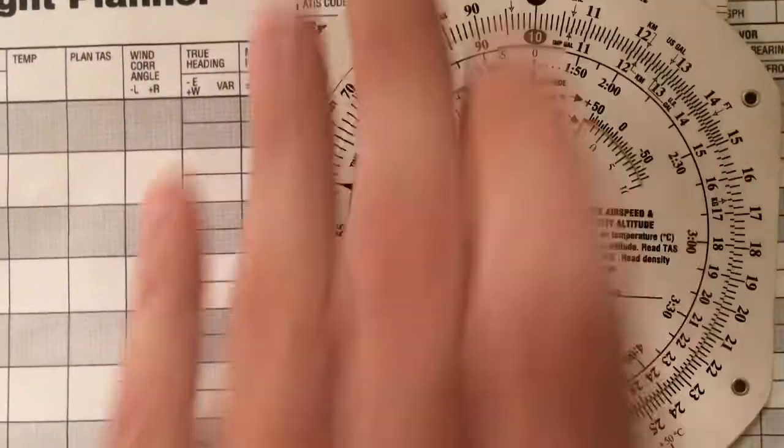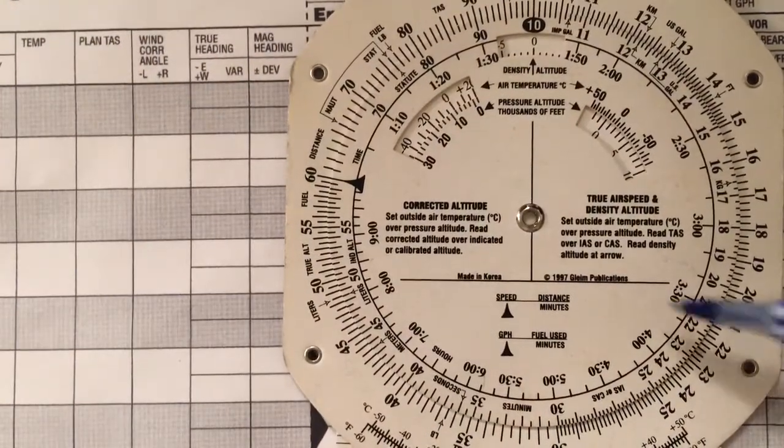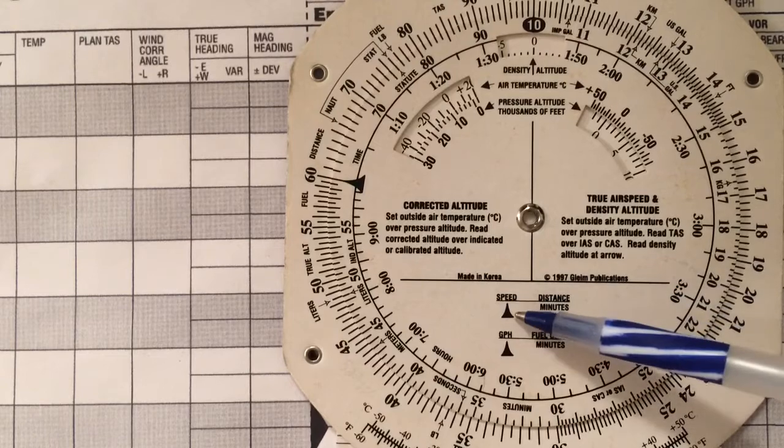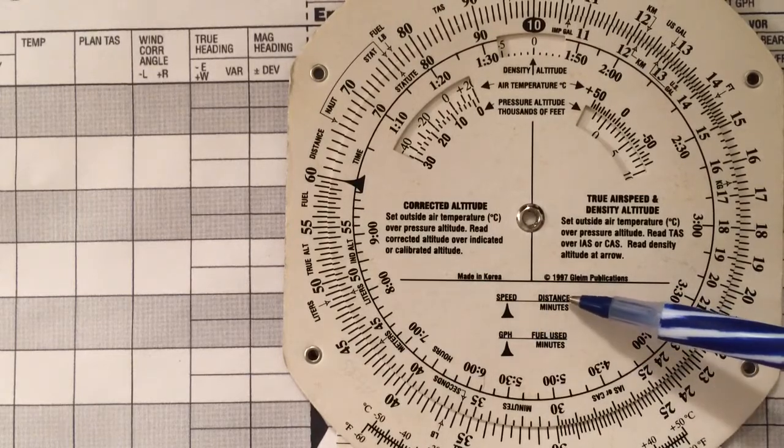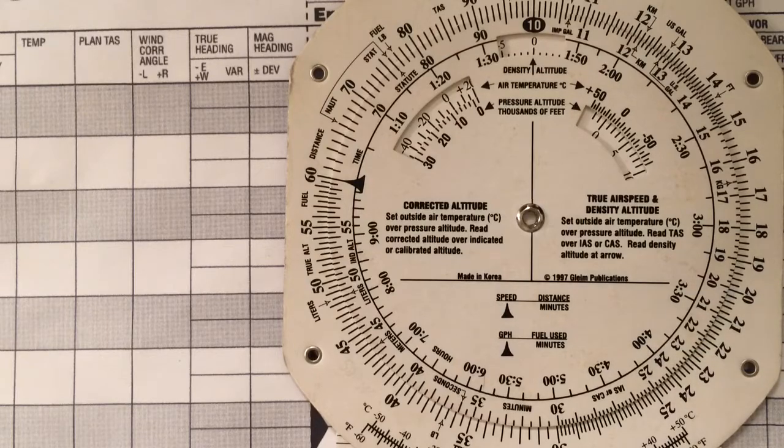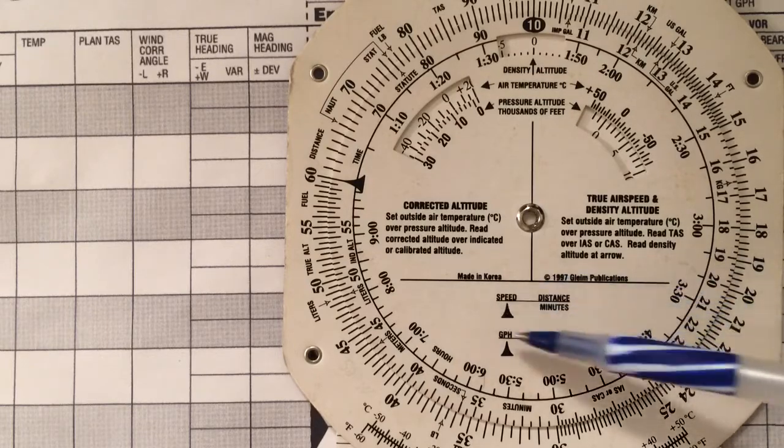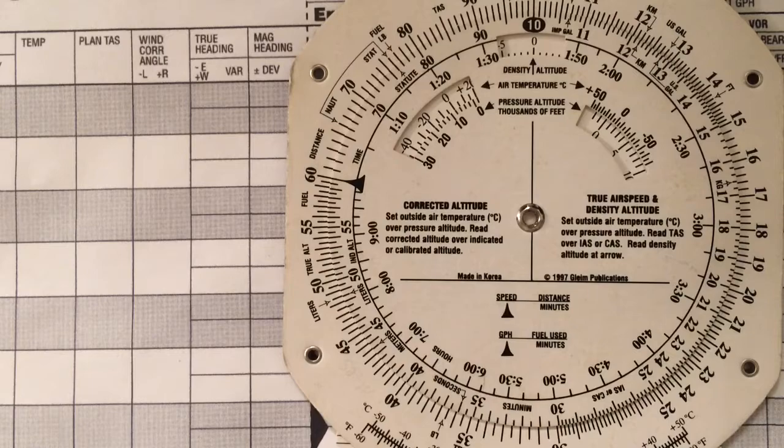Now, to compute these problems, the E6B gives you a little bit of information. It gives you a little bit of help. You can read this as such: set speed, read distance over minutes. Say that to yourself as you read this legend out loud, and it will help you to know how to set up the E6B.